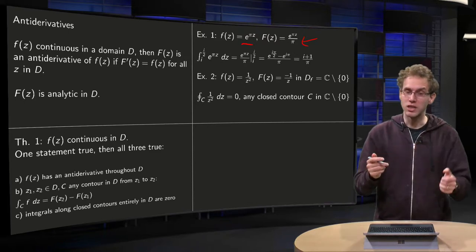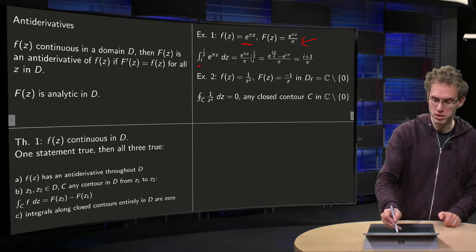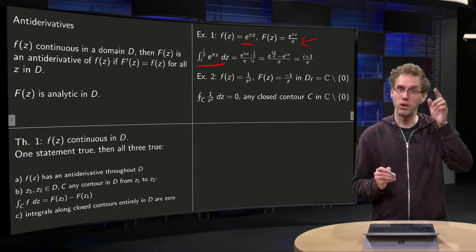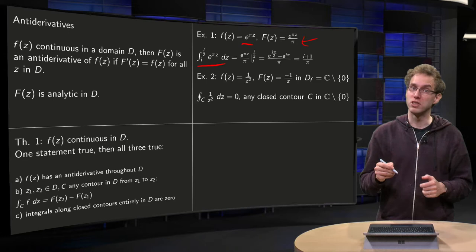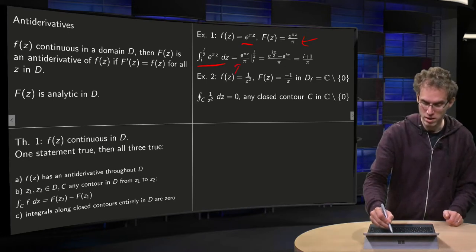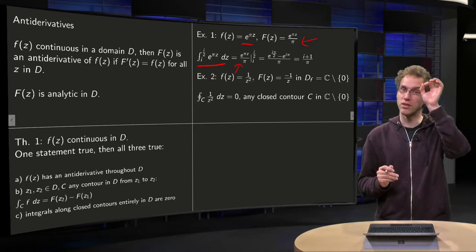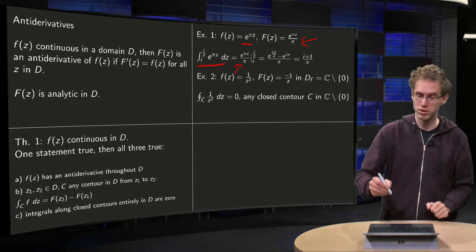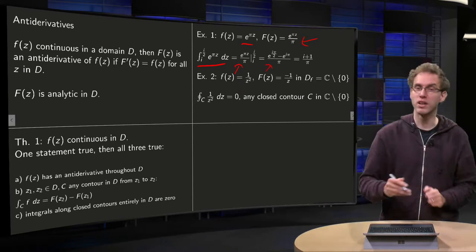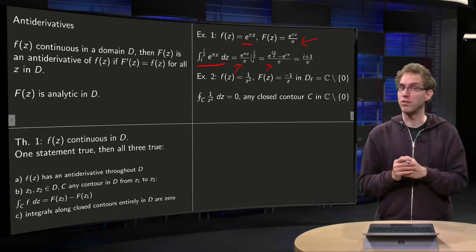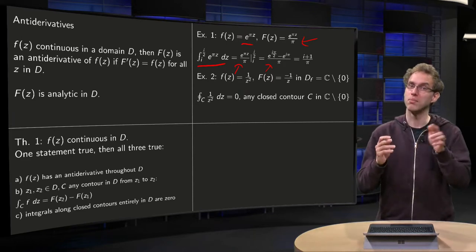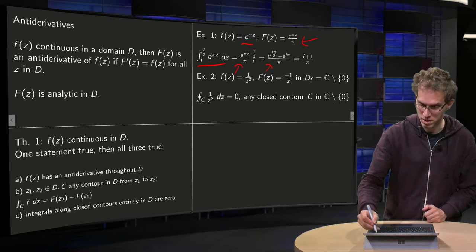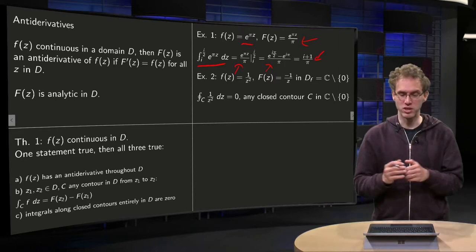We can use this antiderivative to compute, for example, this integral over here, from i to i over 2. Path is not specified, because that doesn't matter, because our function has an antiderivative, and the integral is just the antiderivative in end point minus the antiderivative starting point, as we compute over here. e to the power of i pi over 2 is just i, and e to the power of i pi equals minus 1, so we get i minus minus 1, i plus 1 divided by pi as our integral.